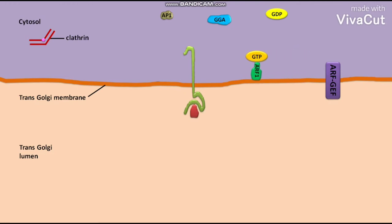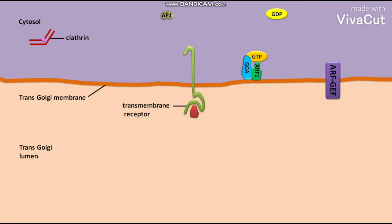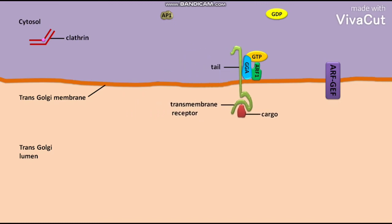The active ARF1-GTP then recruits an adapter protein called GGA. This recruitment is the first step of the boarding process. The trans-Golgi membrane also contains a transmembrane receptor having a cytosolic tail and a bound luminal cargo. The bound GGA then interacts with the cytosolic tail of the transmembrane receptor and recruits the transmembrane receptor with its bound luminal cargo. The GGA then recruits another adapter protein called AP1.